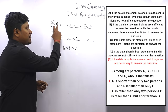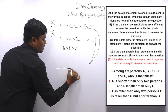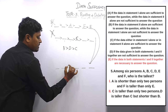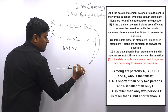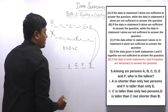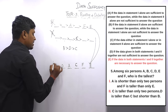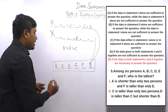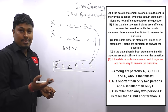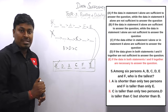Combining both statements: A is at position 4 (shorter than only 2), C is also at position 4 — but since A > C > D from the combined info, and F is greater than E, and B > D > C, after fixing all positions the tallest person is B. Both statement 1 and statement 2 are needed to answer question 5.